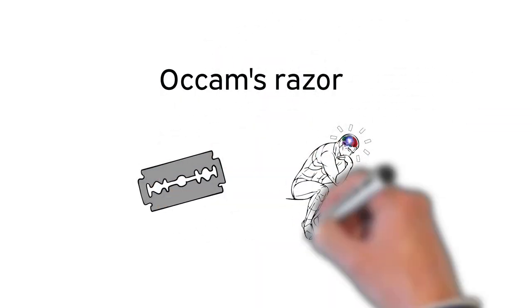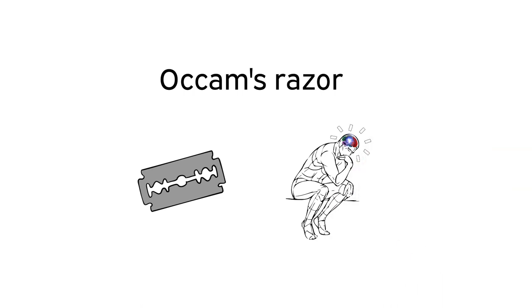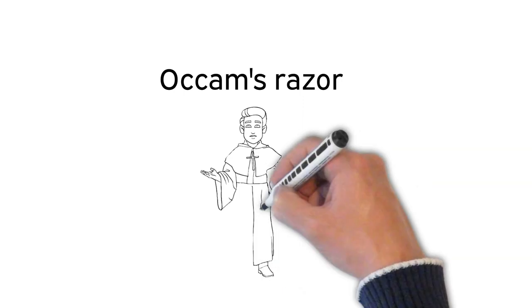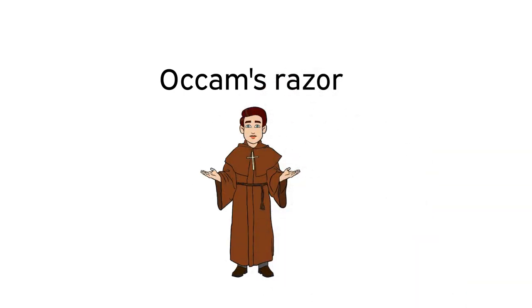Occam's razor, also known as the law of parsimony or law of economy, is named after a Franciscan friar, William of Occam, who lived in 14th century England.